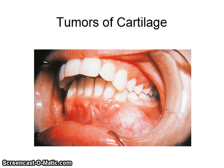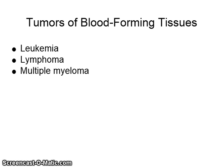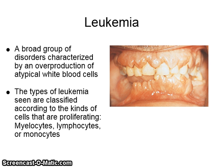Here is an image of a tumor of cartilage. Tumors of blood-forming tissues include leukemia, lymphoma, and multiple myeloma. Leukemia includes a broad group of disorders characterized by an overproduction of atypical white blood cells. The types of leukemia are classified according to the kinds of cells that are proliferating: myelocytes, lymphocytes, or monocytes.